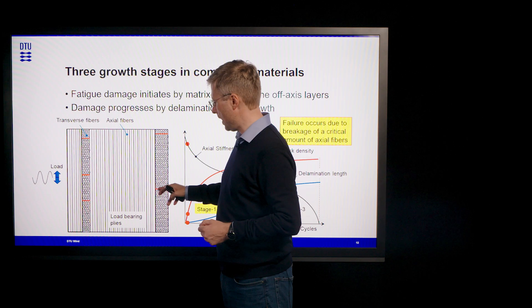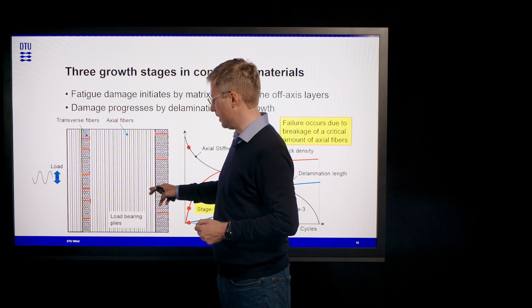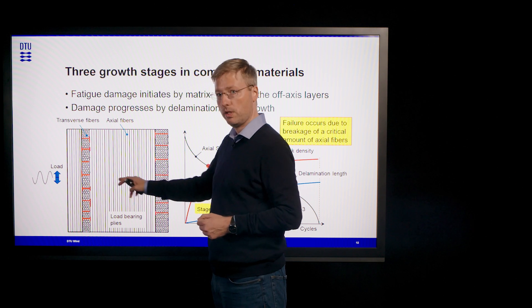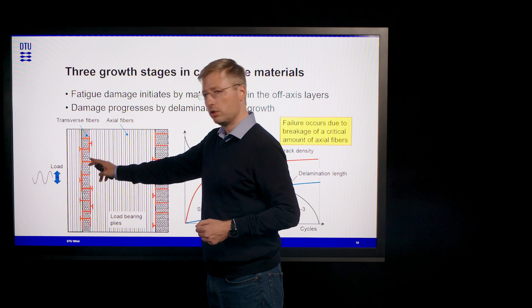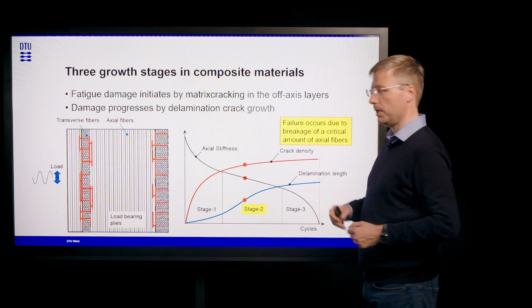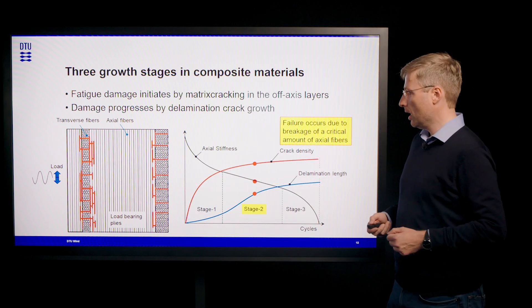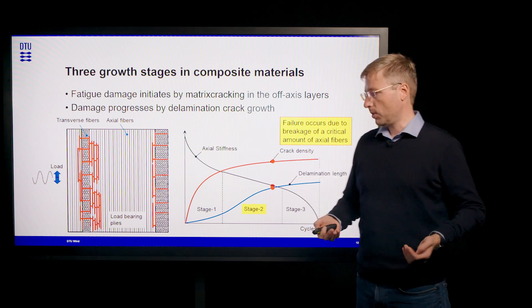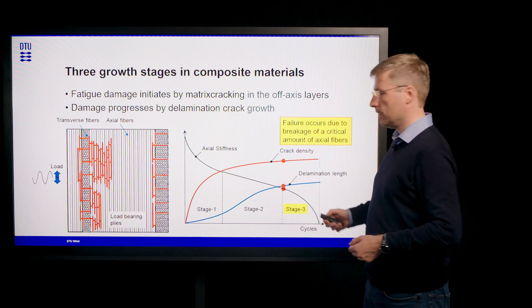It's at that point where the delamination cracking starts. And what it means is that those small micro cracks in the transverse layers, they start to grow into the load bearing plies. And they start to grow along the fibers, which we call the delamination cracks. If we continue that process, we will enter stage three, that is the final stage.